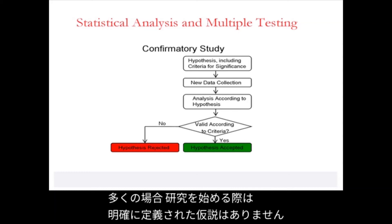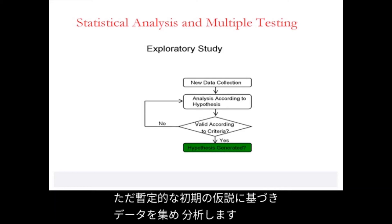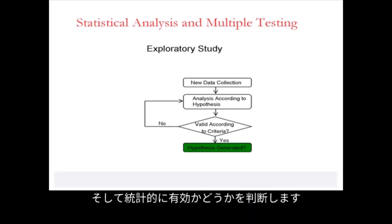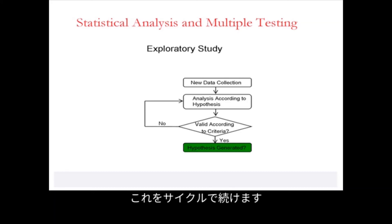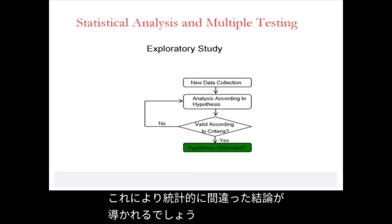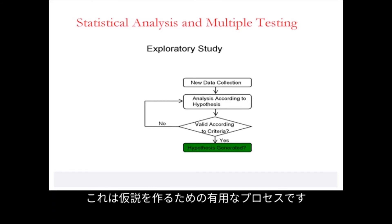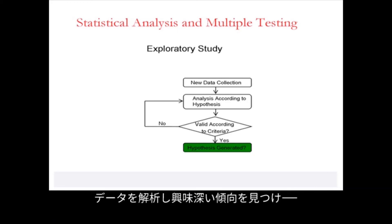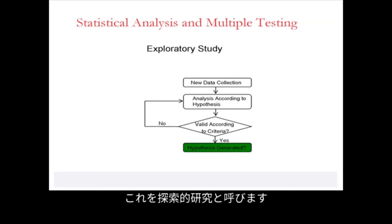In many cases we don't have a clearly defined hypothesis at the outset of our study, so we collect data and analyze according to a tentative initial hypothesis, then determine whether it's statistically valid. If it's not valid, we may go back and define a new, different hypothesis, and keep going through these cycles. What we're actually doing here is multiple testing, and if we are not aware of that, we may unintentionally fail to correct our validation criteria and draw statistically incorrect conclusions. However, this may still be a useful process for generating hypotheses — we can find trends that look interesting and yield hypotheses for later validation. We call this an exploratory study.